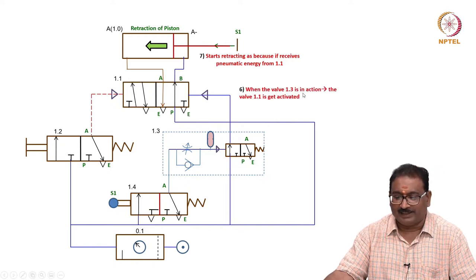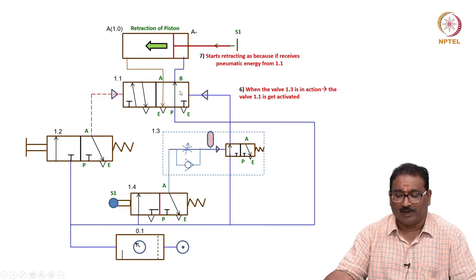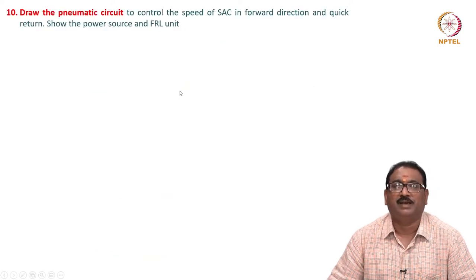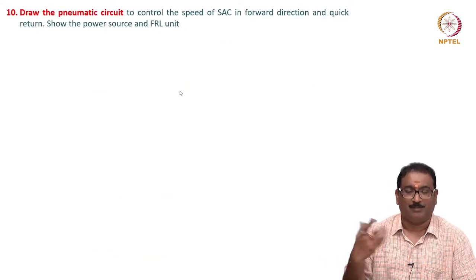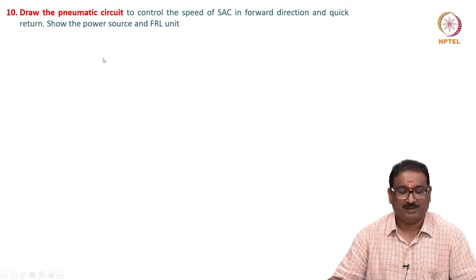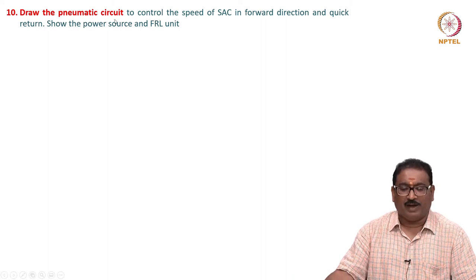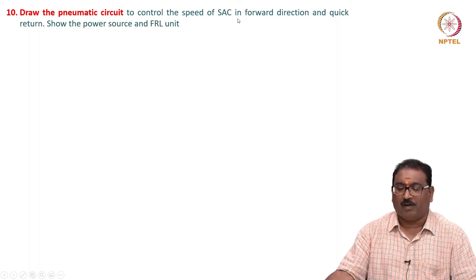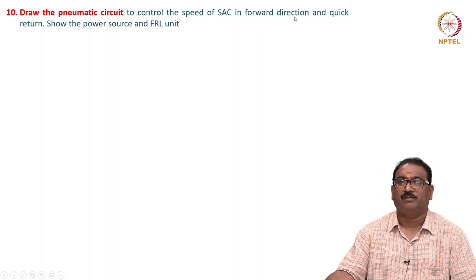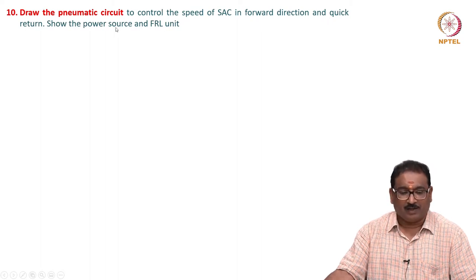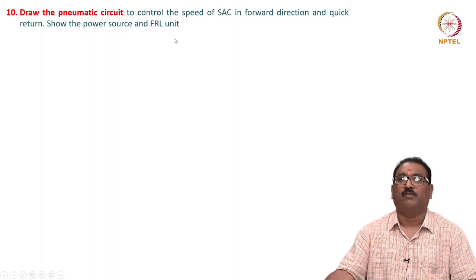When valve 1.3 is in action, valve 1.1 gets actuated, then the cylinder returns. Simple, very simple. The next problem: draw the pneumatic circuit to control the speed of a single-acting cylinder in the forward direction and provide a quick return. Show the power source and FRL unit.